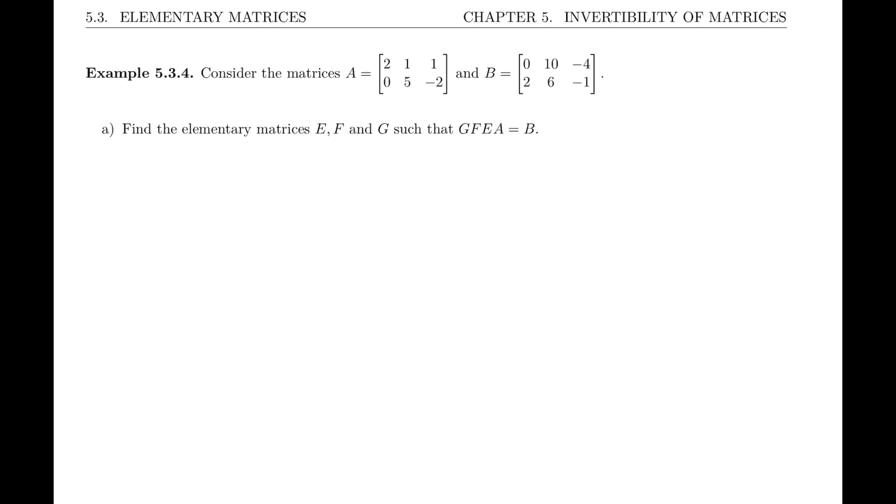Now remember, left multiplying by elementary matrices is the same as applying elementary row operations. So the idea here is to, starting from the matrix A, find what operation I need to apply to get matrix A1. And I'm going to call this operation OE, instead of O1, since it corresponds to matrix E.